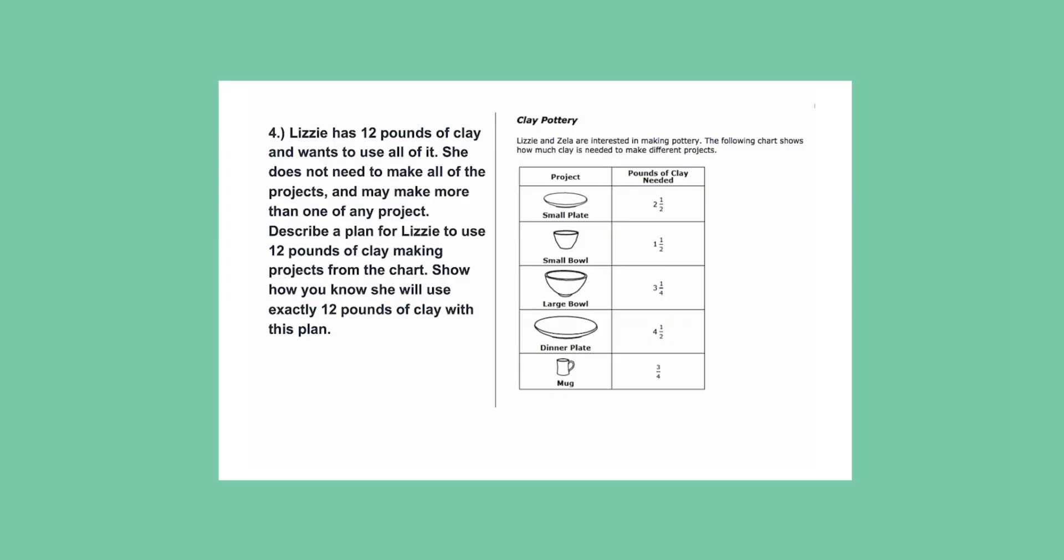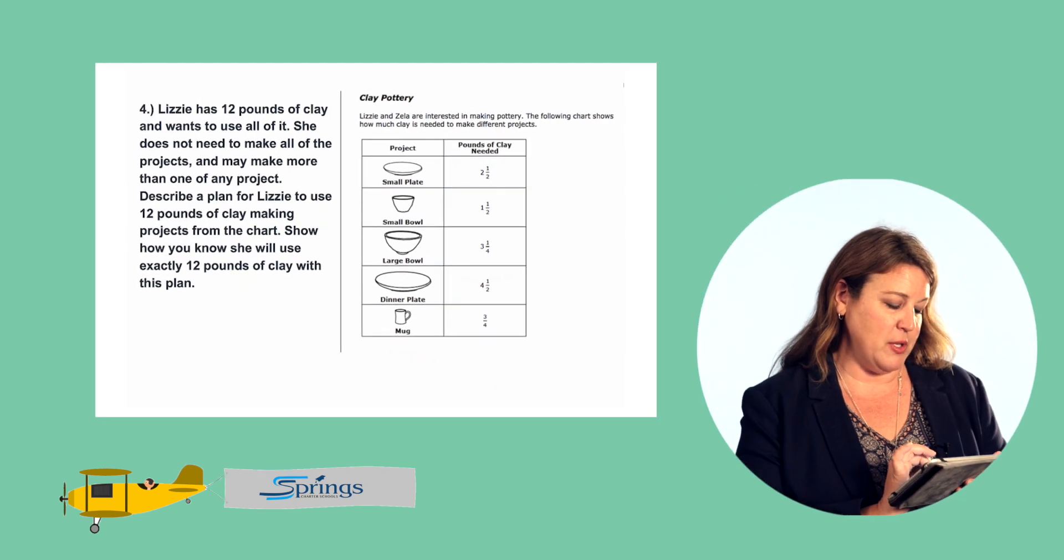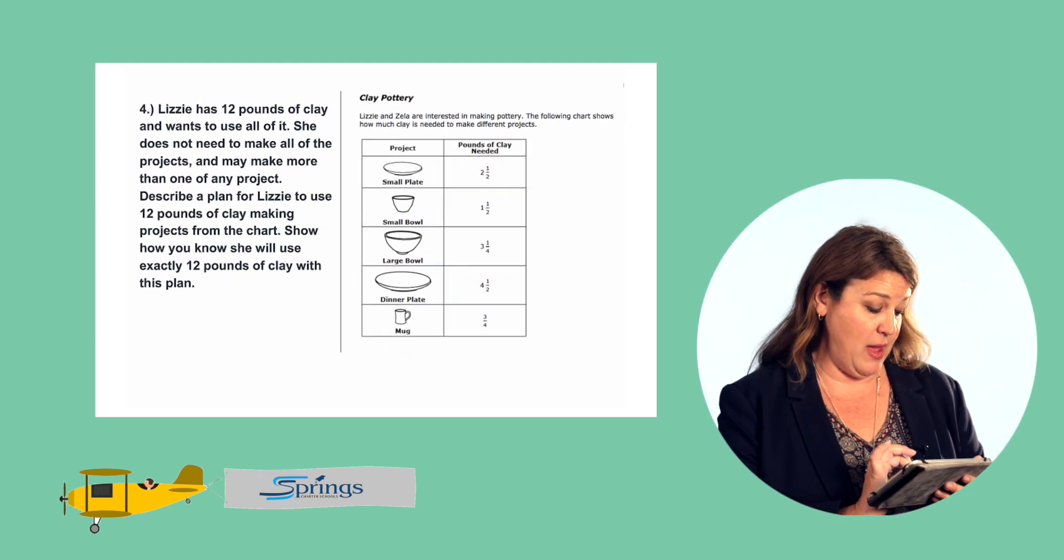Question number four. Lizzy has 12 pounds of clay. She wants to use all of it. She does not need to make all of the projects and she may make more than one of any project. Describe a plan for Lizzy to use 12 pounds of clay making projects from the chart. Show how you know she will use exactly 12 pounds of clay with the plan.